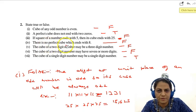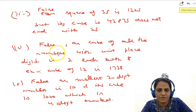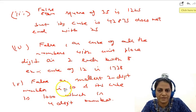Fourth one is, there is no perfect cube which ends with 8. This is also false. As cube of all the numbers with unit place digit as 2 ends with 8. For example, cube of 12 is 1728.